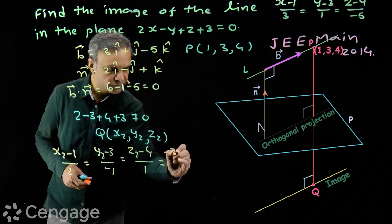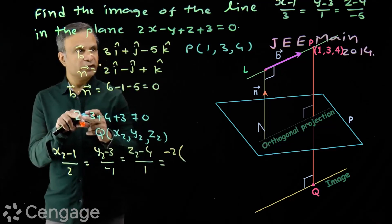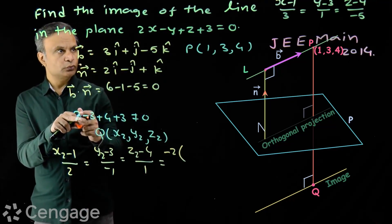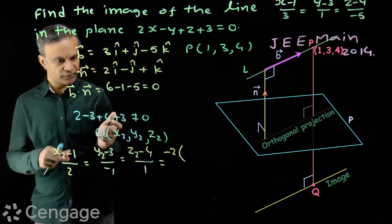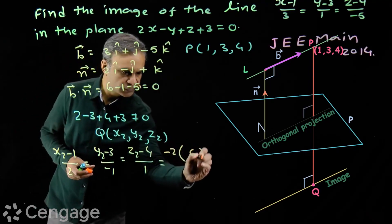This is equal to minus 2 into. Now, we put these coordinates in this expression. We get this value. 2 minus 3 plus 4 plus 7. This is 6. This is 6.